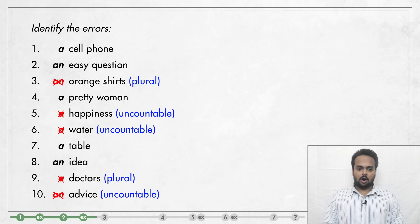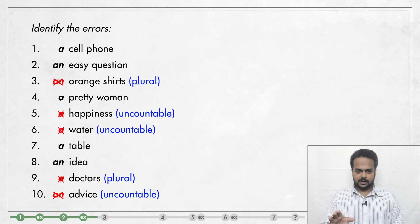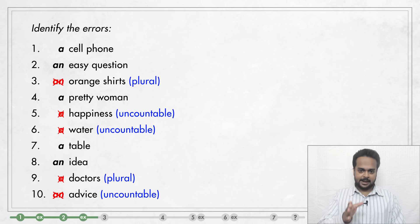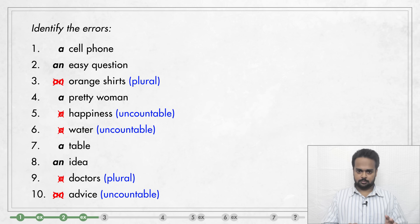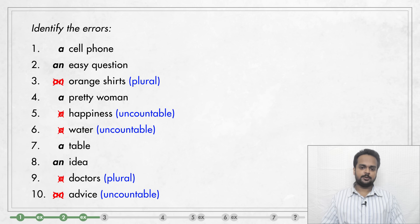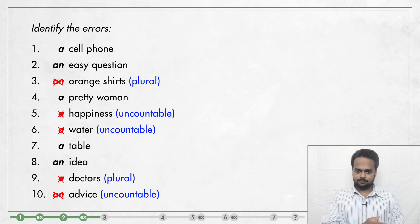Now, a quick note here: the article THE can be used with all kinds of nouns — singular or plural, countable nouns and uncountable nouns. OK, so let's now talk about how to choose between A or AN and THE.